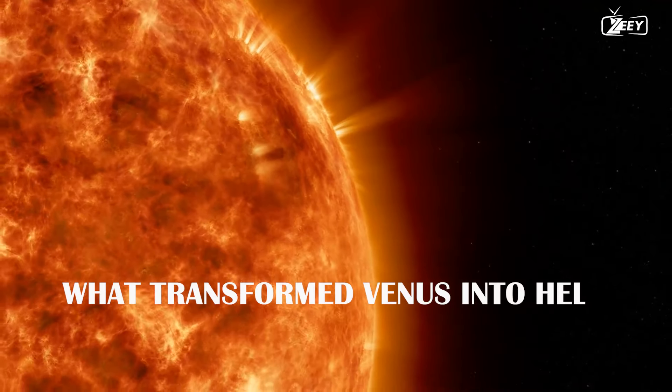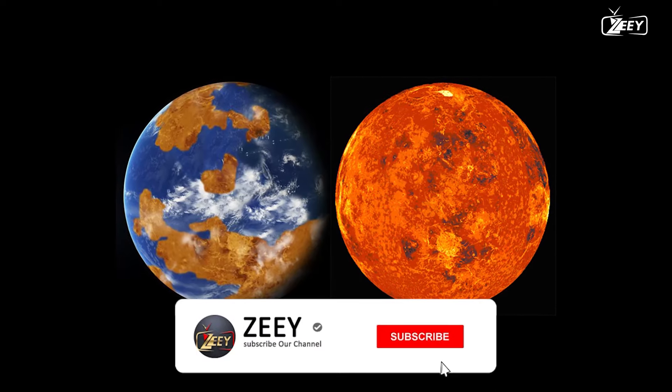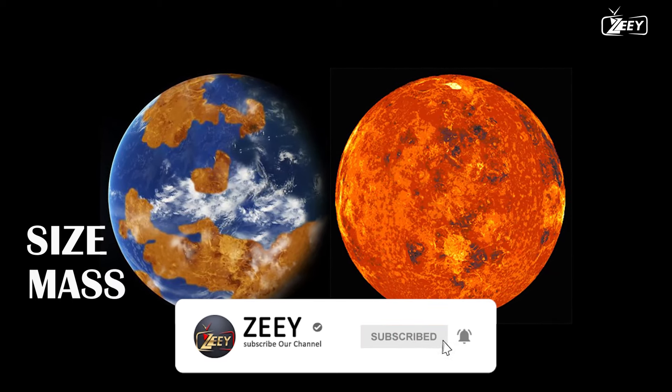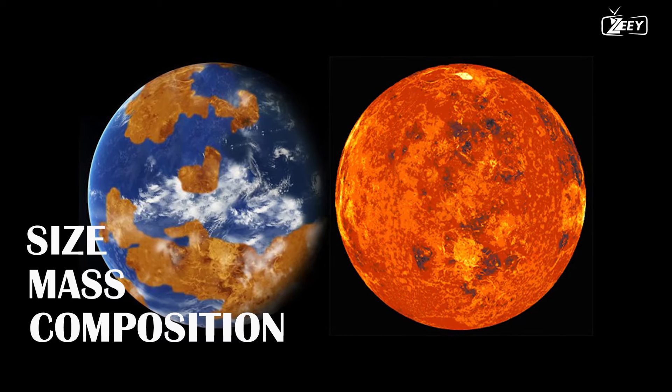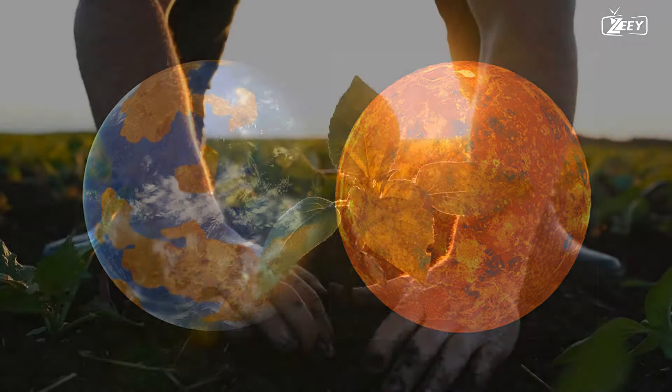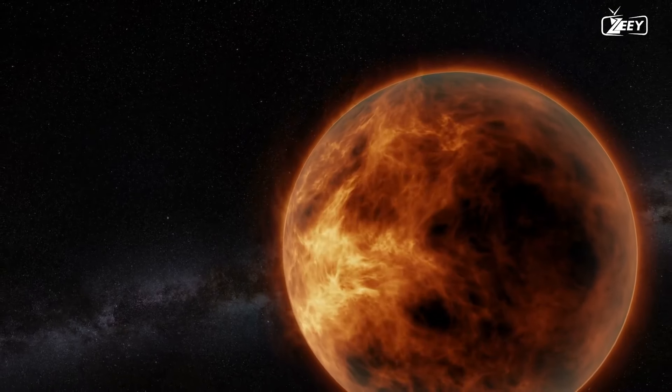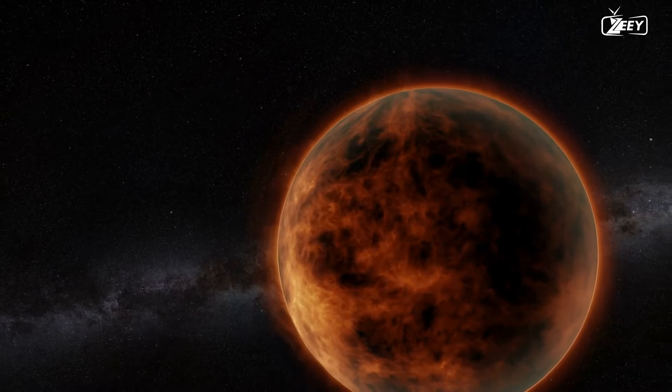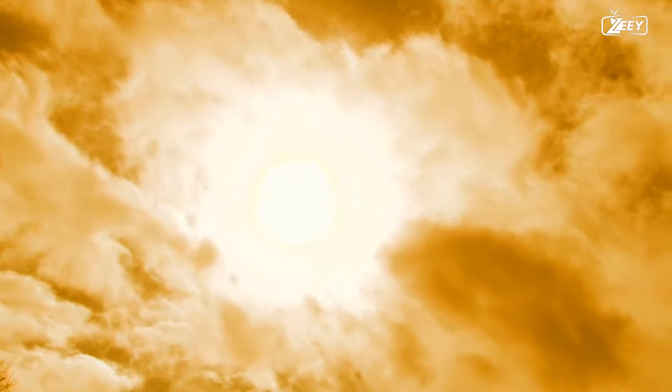What Transformed Venus into Hell? Venus is commonly referred to as Earth's sister planet because of its size, mass, and composition. The similarities, however, end there. While Earth is a habitable planet, Venus is a dead, hellish environment with temperatures hot enough to melt lead and a poisonous and dense atmosphere. Venus's distance from the sun, atmosphere, and unique geological history are all elements that have contributed to its inhospitable climate.